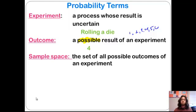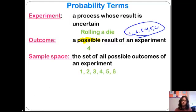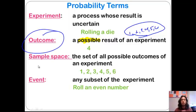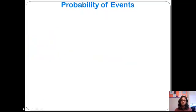A sample space is the set of all possible outcomes for an experiment — every single possible output. An outcome would be one result. Any event is a subset of the experiment. For example, we could roll an even number, so as opposed to just a single outcome, we're coming up with a set of outcomes that will satisfy what we're trying to find.